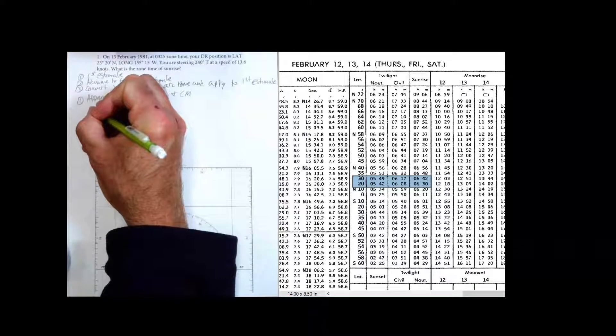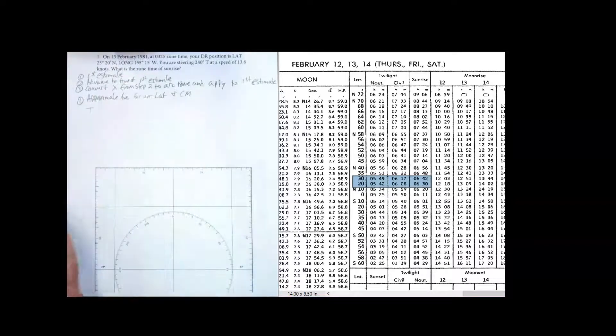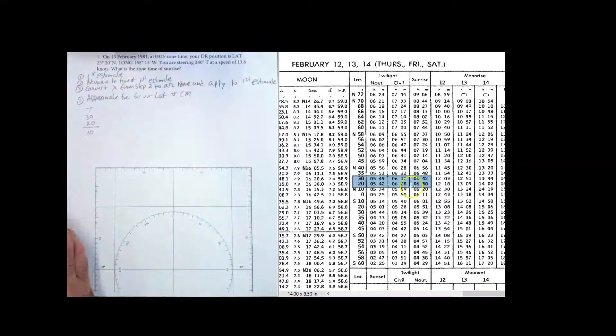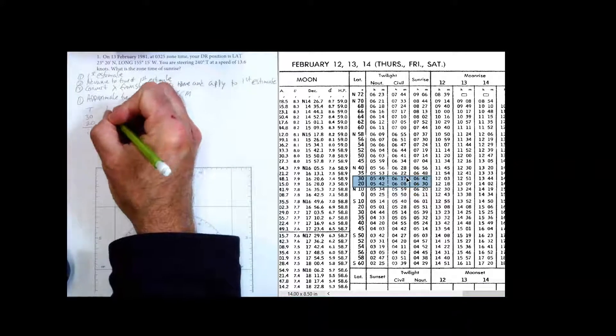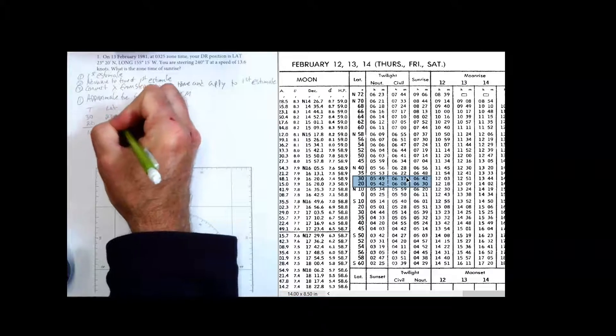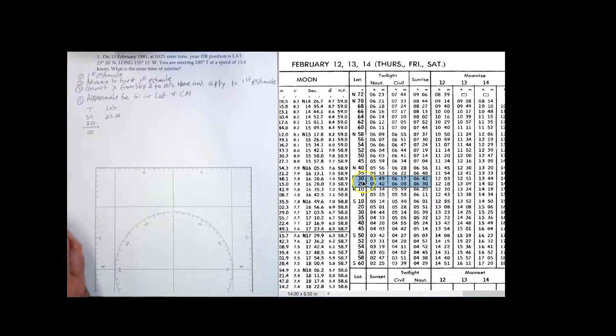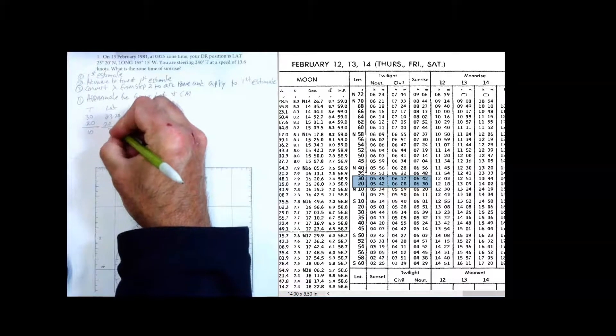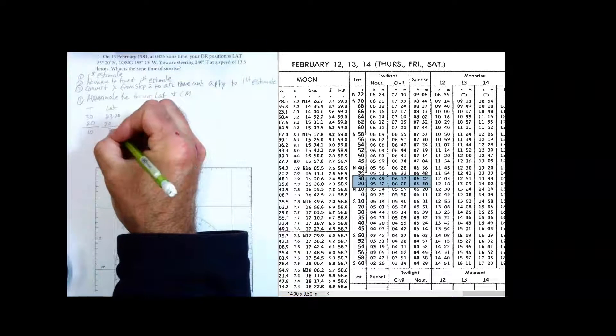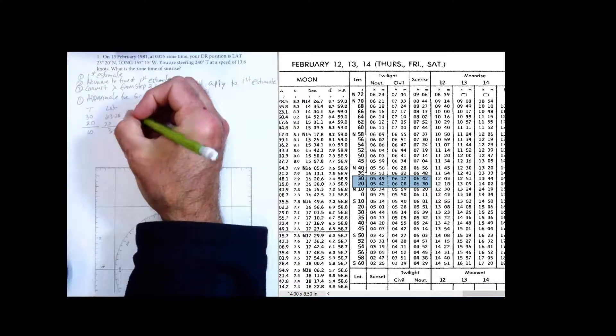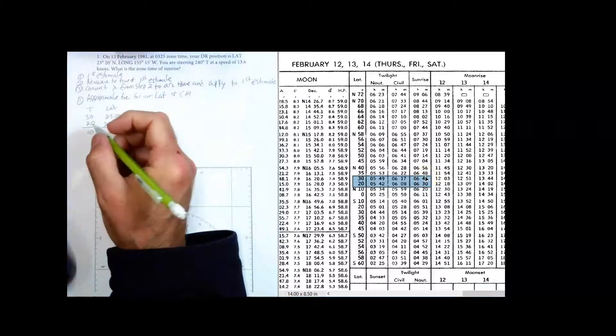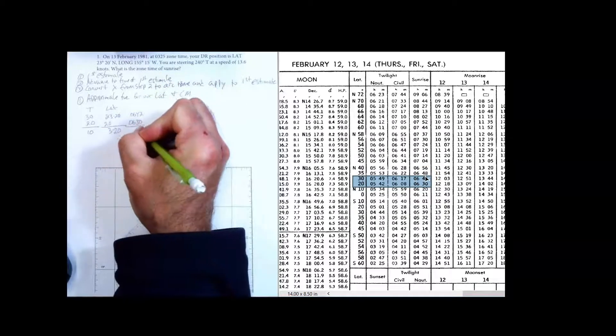So this is going to be our tabular interval. And what I'm going to do is I'm going to take this 30 and this 20. So I'm going to put them in those orders, 30, 20. That's 10. And then I'm going to take my actual latitude, which is, so my lat is 2320. And I'm going to subtract whichever one of these is lower. That's 20. And my latitude difference is 320. Now the last thing I need is my two times. So the time for 30 degrees north was 0642, and the time for 20 degrees north is 0630. That's a 12-minute difference.